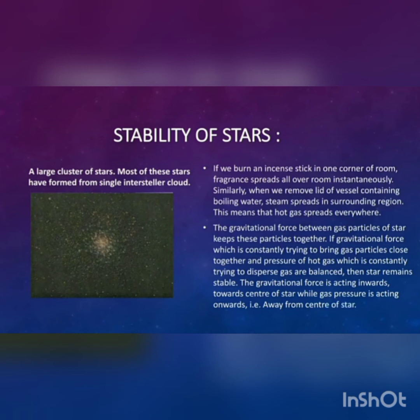The gravitational force between gas particles of a star keeps these particles together. The gravitational force is constantly trying to bring the gas particles close together, while the pressure of the hot gases is continuously trying to disperse them. When these two forces are balanced, the star remains stable. The gravitational force acts inward towards the center of the star, while gas pressure acts outward, away from the center.